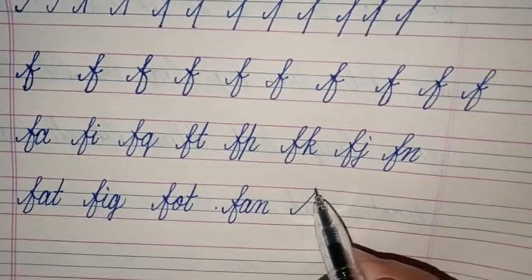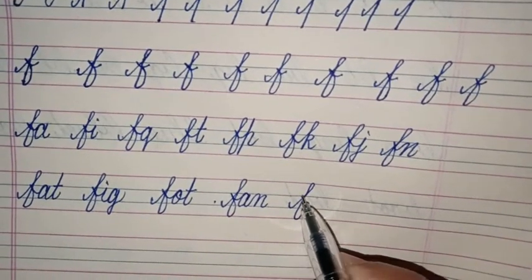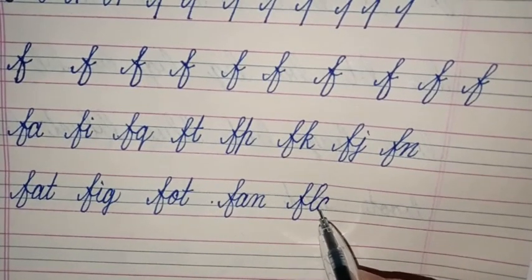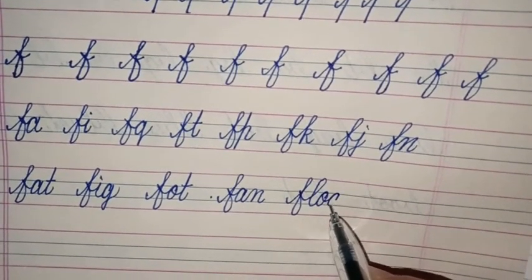Now we will see 4 of the joining with 4 or 5 letters. F, L, O, A, D. Float.